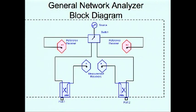The receiver called the R receiver, R for reference, provides a continuous accurate measure of the incident signal. The reflected wave is measured with the A receiver and the transmitted wave is measured with the B receiver. With amplitude and phase information of these four waves, we can quantify the reflection and transmission characteristics of our DUT.